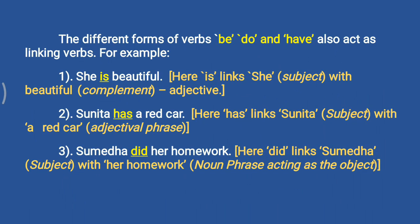The different forms of verbs be, do, and have also act as linking verbs. For example: 'She is beautiful' — 'is' links the subject 'she' with 'beautiful,' the complement. 'Sunita has a red car' — 'has' links 'Sunita' with 'a red car,' which is an adjectival phrase. 'Sumedha did her homework' — 'did' links 'Sumedha,' the subject, with 'her homework,' a noun phrase acting as the object.